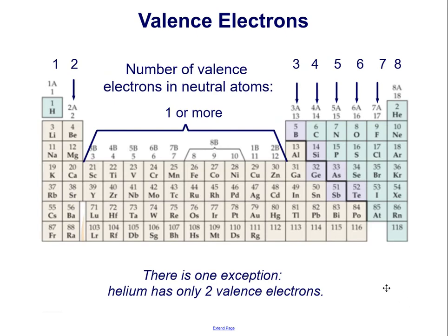This chart shows the valence electrons across the periodic table. As you can see, groups 1 and 2 have 1 valence electron and 2 valence electrons. Similarly, groups 13, 14, 15, 16, 17, and 18 have 3, 4, 5, 6, 7, or 8 valence electrons. The transition metals are more complicated.